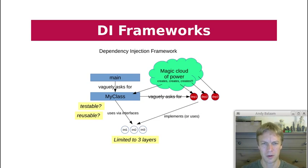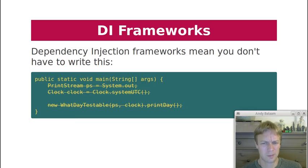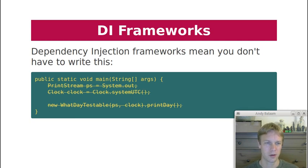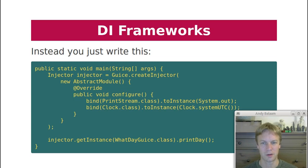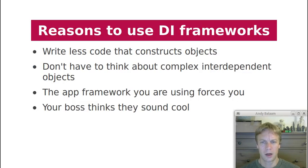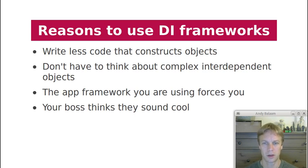Anyone who's heard any of my videos before will know that when I use the word 'magic' I often mean bad. Hopefully I'll get across why I think it's bad to do magic in this way as we go. So as I said before, if you use a dependency injection framework you don't have to write all of this straightforward standard Java code — there are only three lines. Instead you can write all of this crazy abstract module weirdness, passing class objects into bind methods, and magically you'll get an instance of WhatDayJuice without having to construct it yourself.